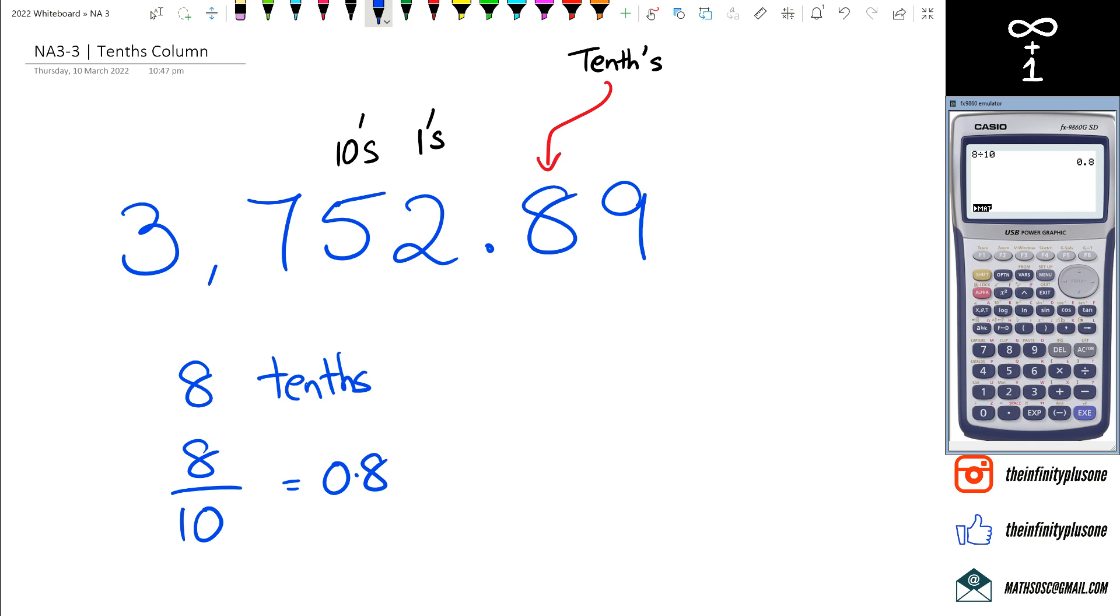After the decimal there is no ones column. Sometimes I've heard kids say 'what about the ones column?' Well, you don't really have a ones column because that's the same thing as saying ones. If you think about it, two lots of ones is just two, so you don't really have a ones column.